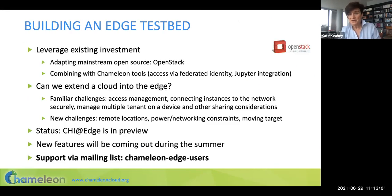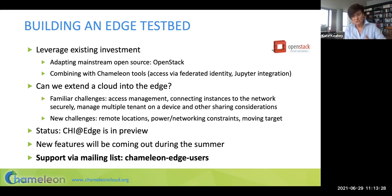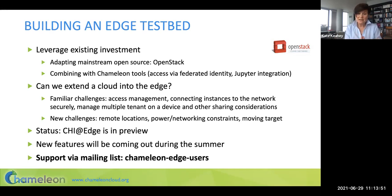A few words about the implementation. As usual, we want to build on top of mainstream open source. OpenStack already had an implementation that reconfigured resources by deploying containers. We took that implementation, opened it up, and carefully looked at the assumptions it makes — that the resources OpenStack operates on are in a data center. Our resources are not in a data center, so we had to program around those assumptions. We then combined this with Chameleon tools for federated identity and Jupyter integration, now joined to our OpenStack reprogramming for the edge.